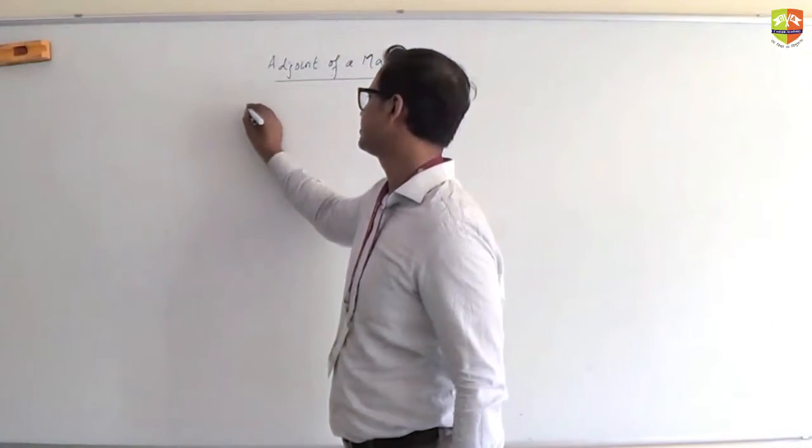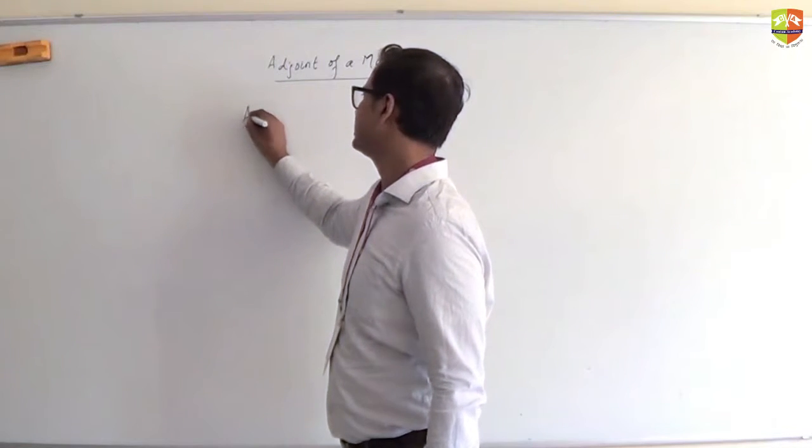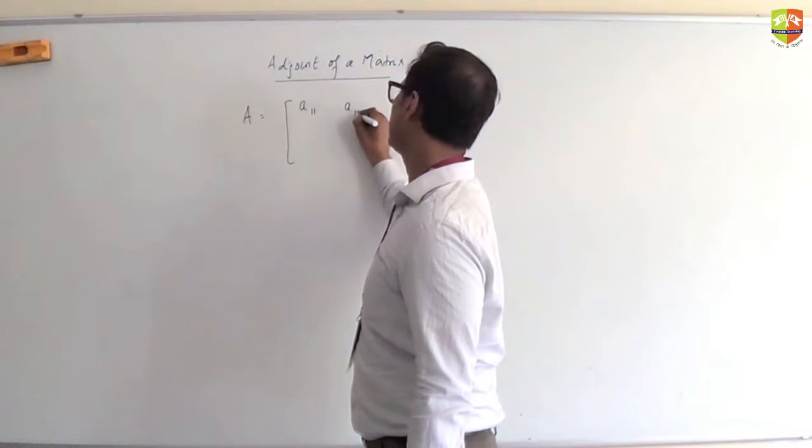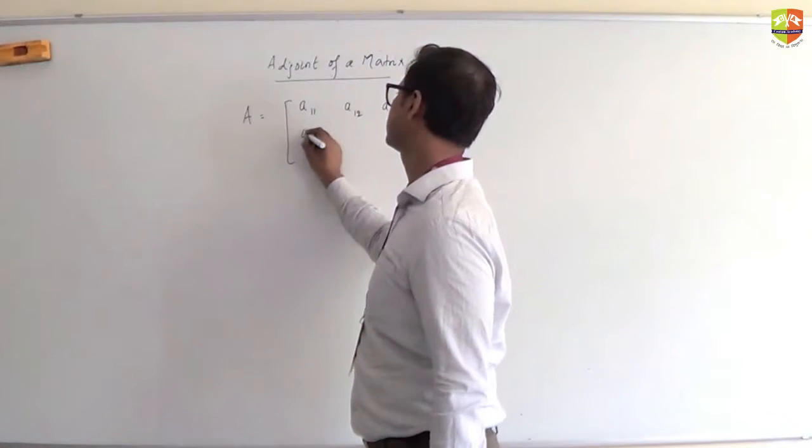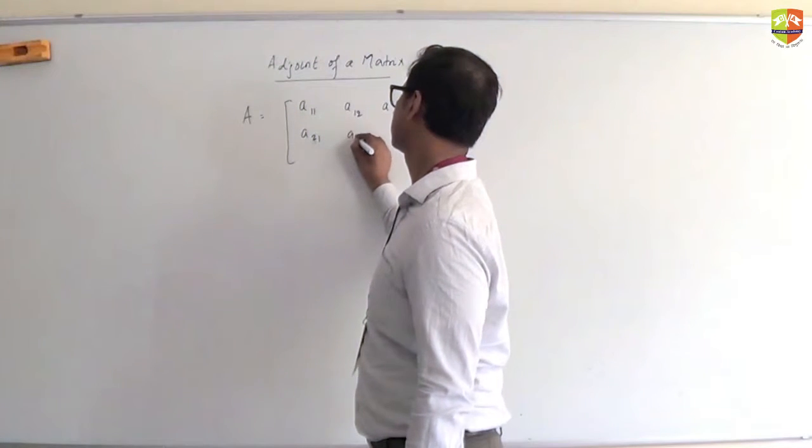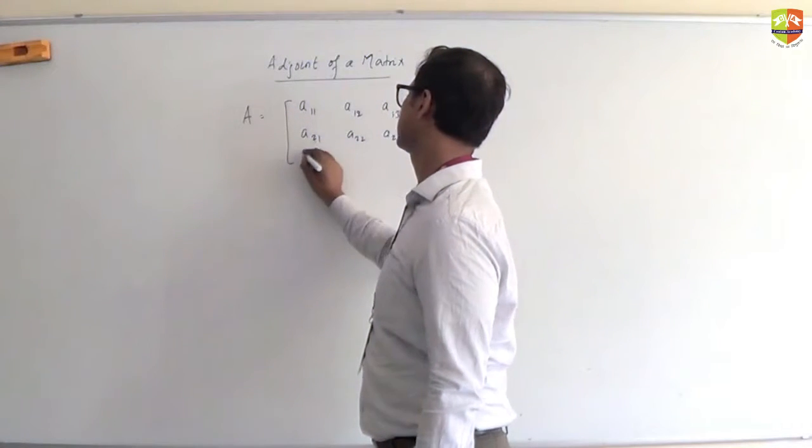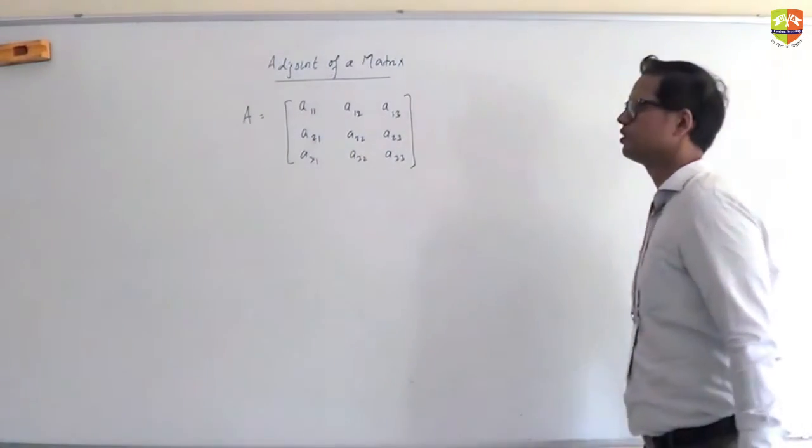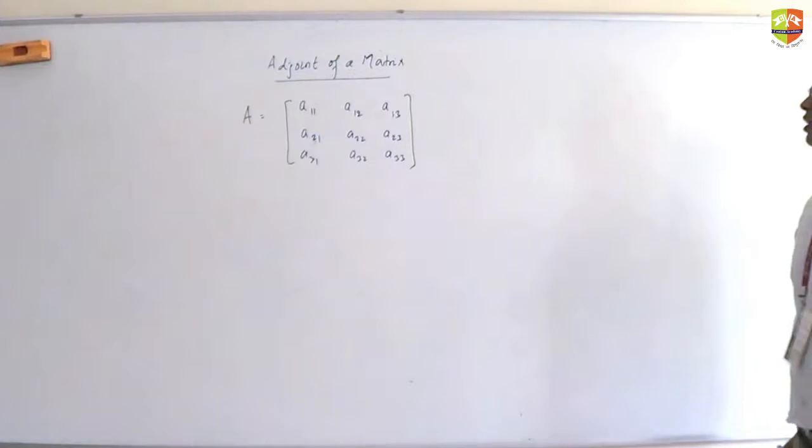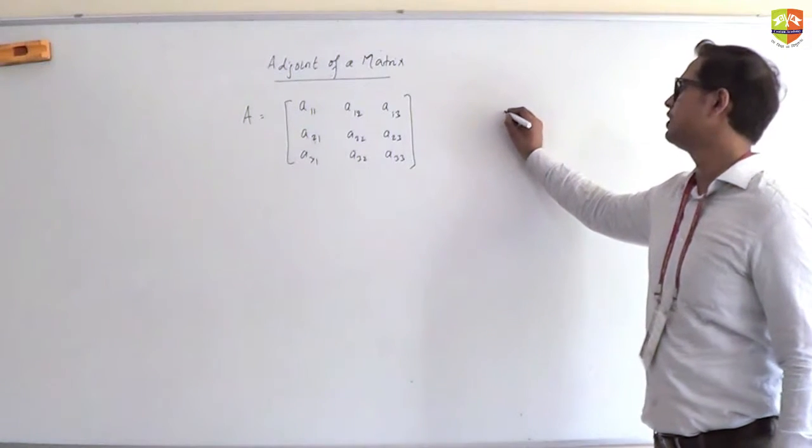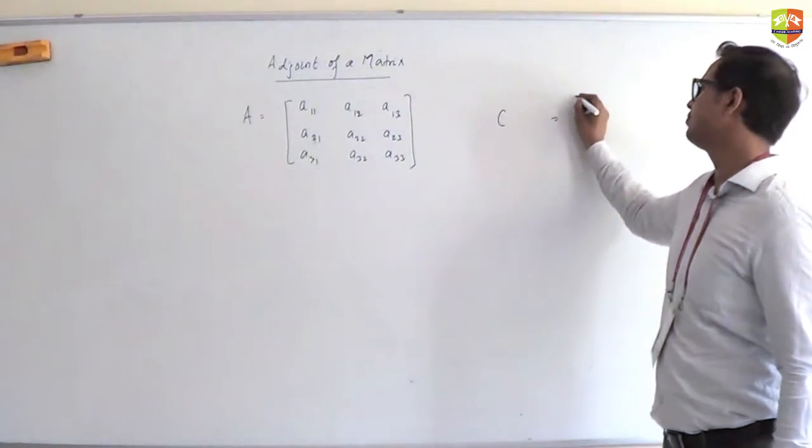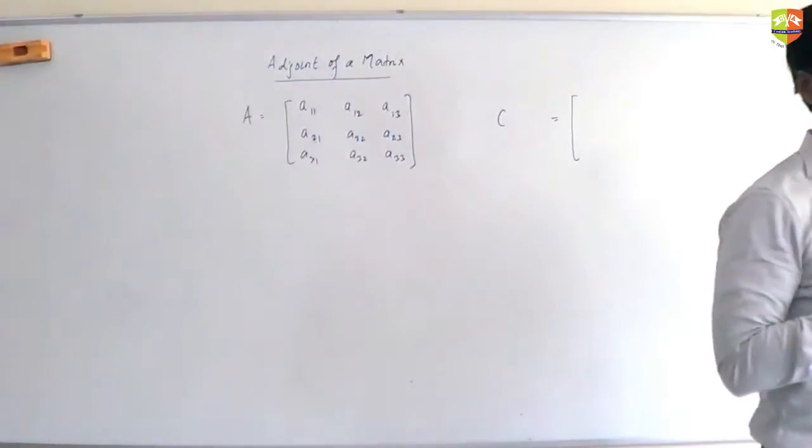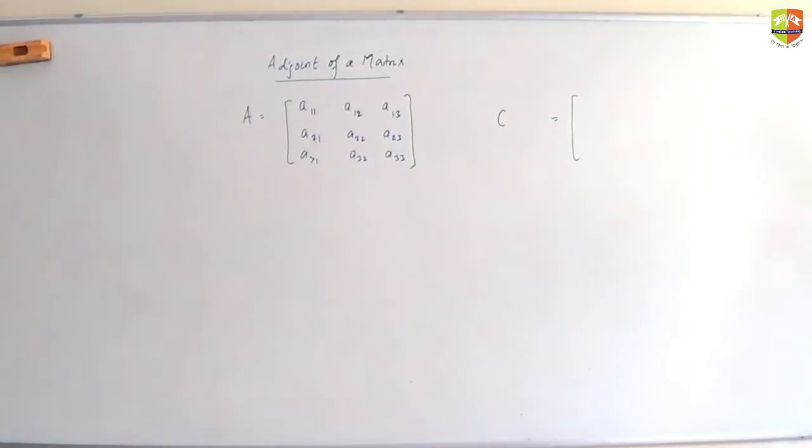Please note that adjoint of a matrix can be found only for a square matrix. And what is this concept? If I take any matrix, let's say matrix A of order 3, and if I construct another matrix, let me call it matrix C, by replacing the elements with their cofactors.